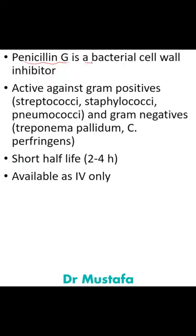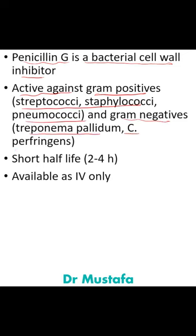Penicillin G is a bacterial cell wall inhibitor. It is active against gram-positives like strep, staph, and pneumococci, and gram-negatives like Treponema pallidum and C. perfringens.